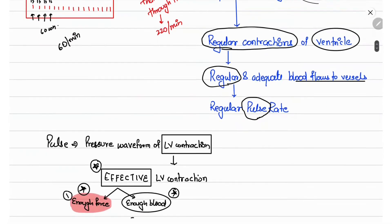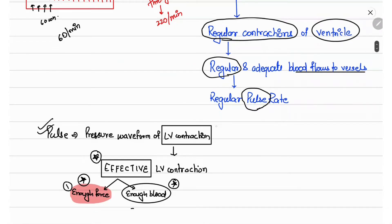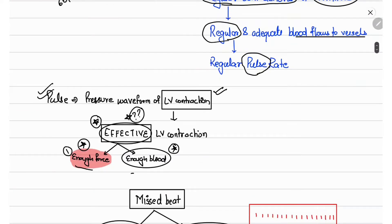The pulse rate is the pressure waveform of left ventricle contraction. For it to be palpated as a pulse in the peripheral vessel, the left ventricular contraction must be effective. This requires two conditions: first, there should be enough left ventricular contraction force; and second, there should be enough blood present in the left ventricle cavity.